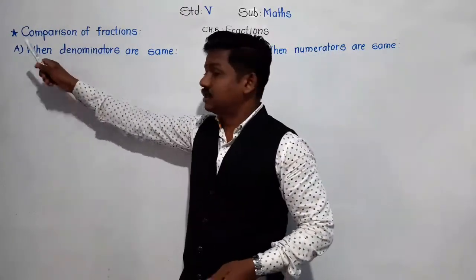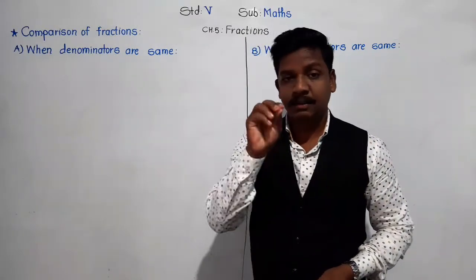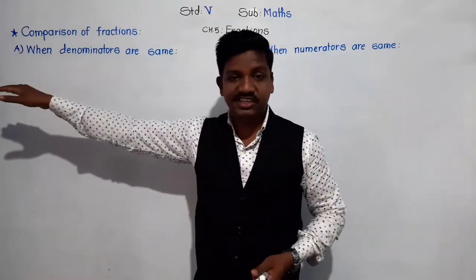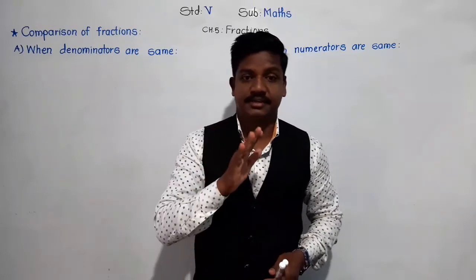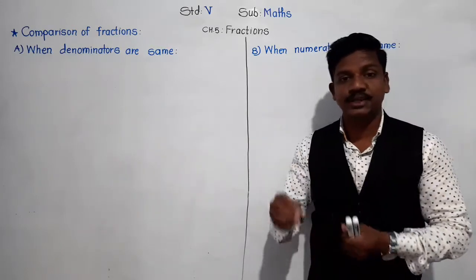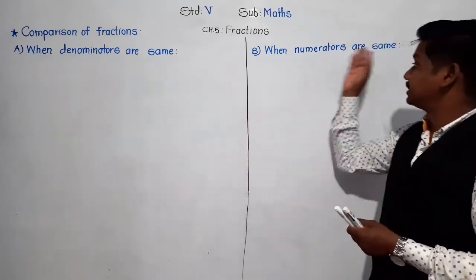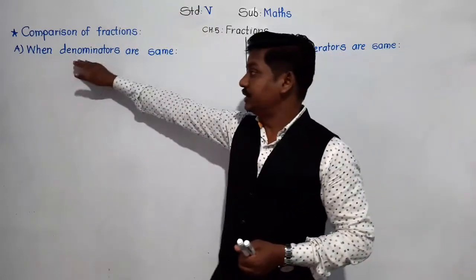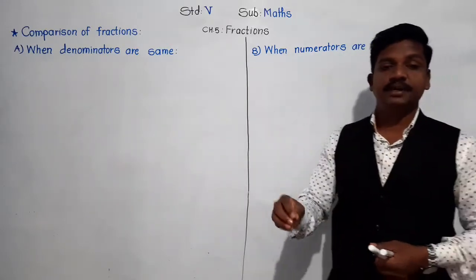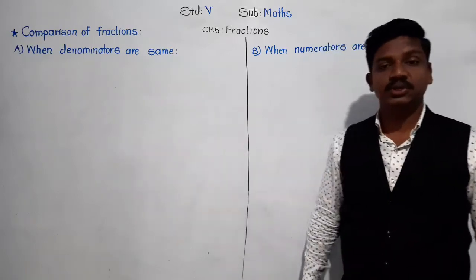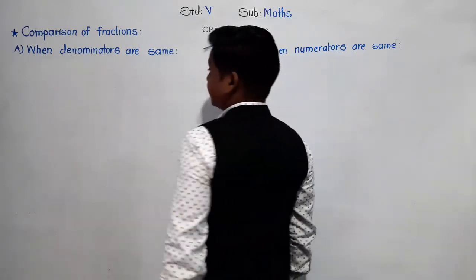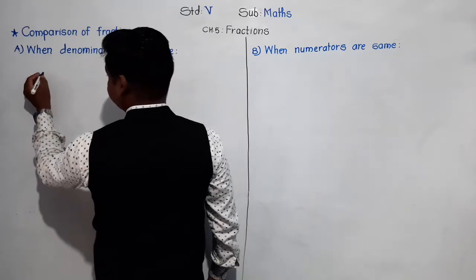In this we are going to learn two types of comparison: comparison of fractions when their denominators are same, and comparison of fractions when their numerators are same. In these two conditions, how to compare the fractions — that we are going to learn today. First we will see when denominators are same.